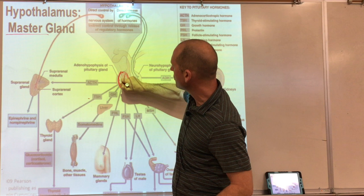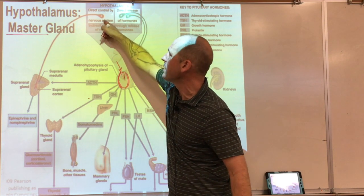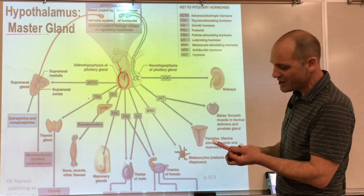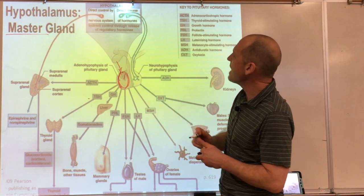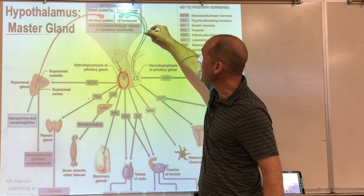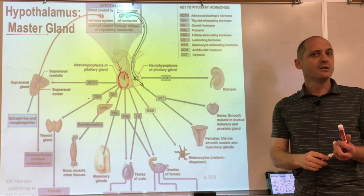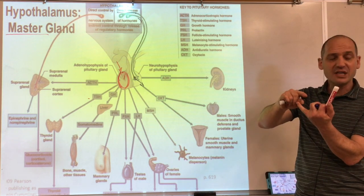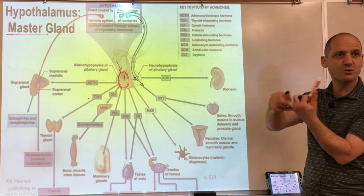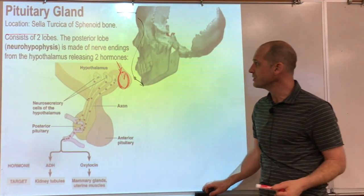The hypothalamus controls the anterior pituitary via releasing hormones and inhibiting hormones. The hypothalamus can signal the anterior pituitary to secrete a hormone, or it can tell it to stop — using releasing hormones to turn things on and inhibiting hormones (statins) to turn them off.